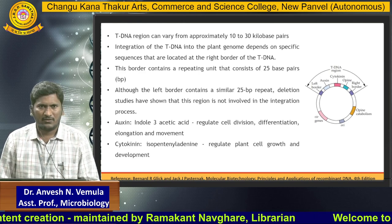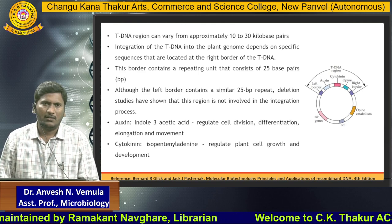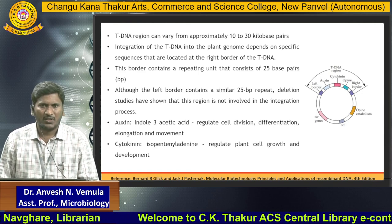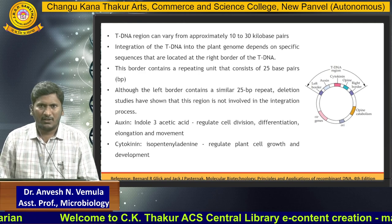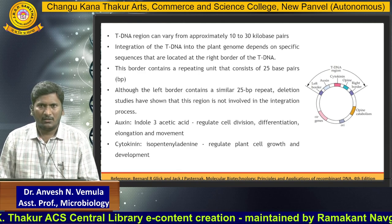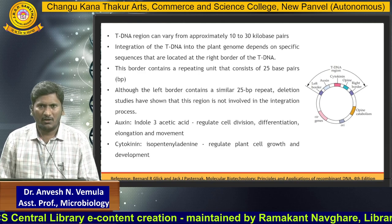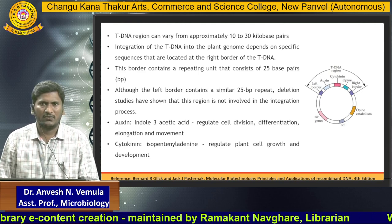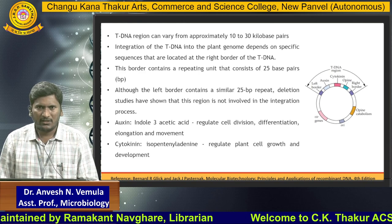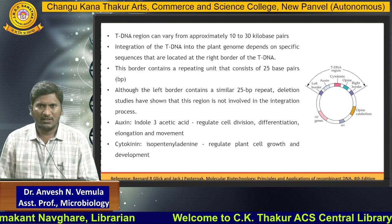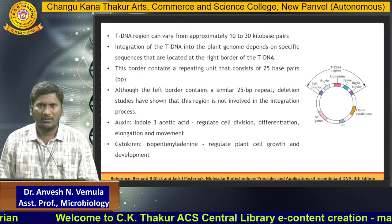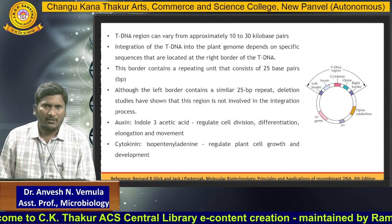T-DNA is approximately a 10 to 30 kilobase structure that integrates into the plant chromosome with the help of a specific border called the right border. Looking at the Ti plasmid, there are two different borders: the right border and the left border. These border regions, along with other genes, constitute the T-DNA or transfer DNA. The right border contains cytokinin genes and opine genes, followed by the left border.